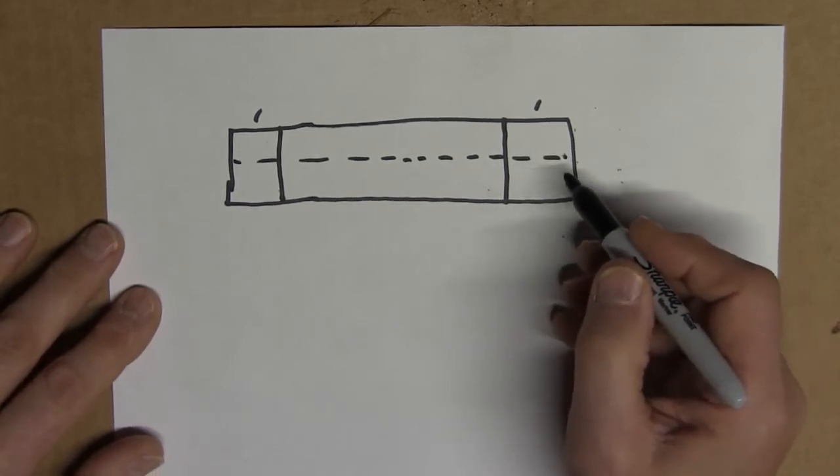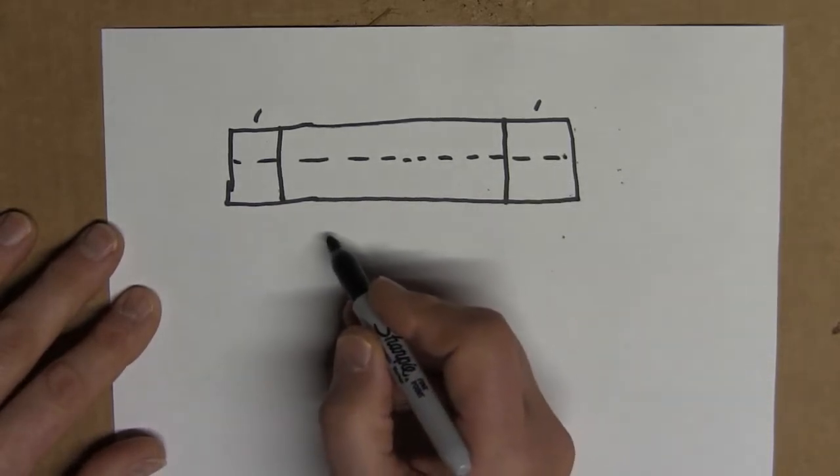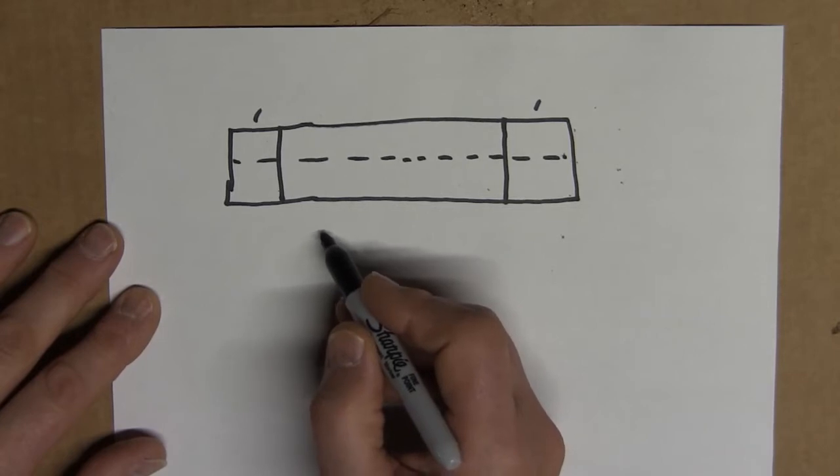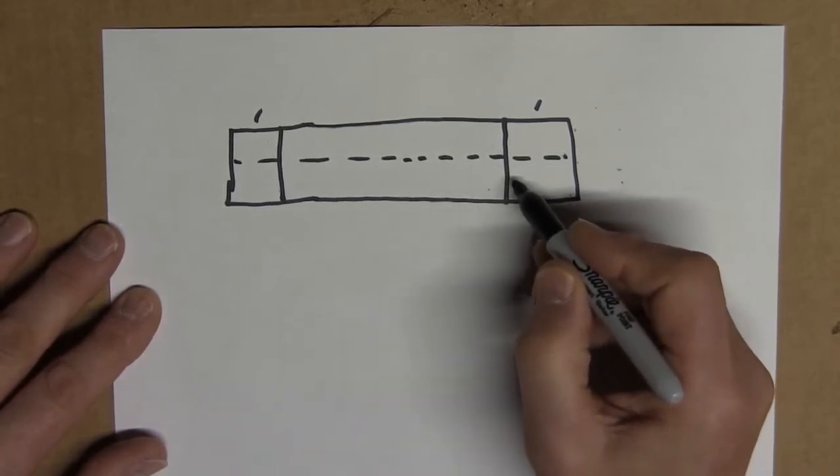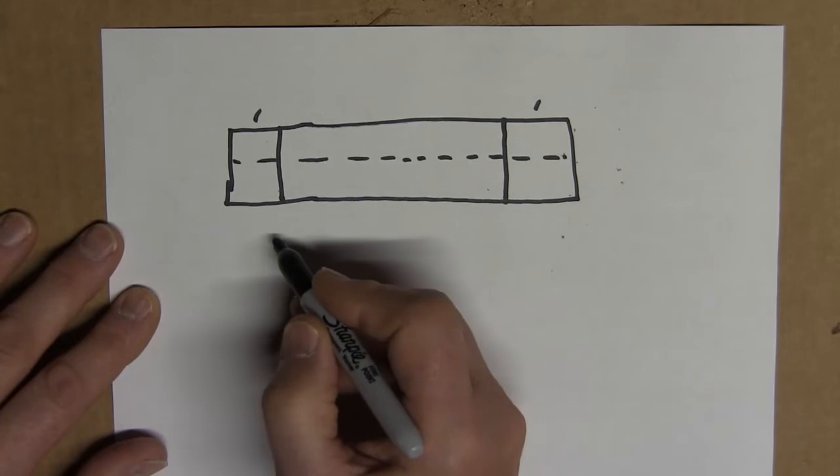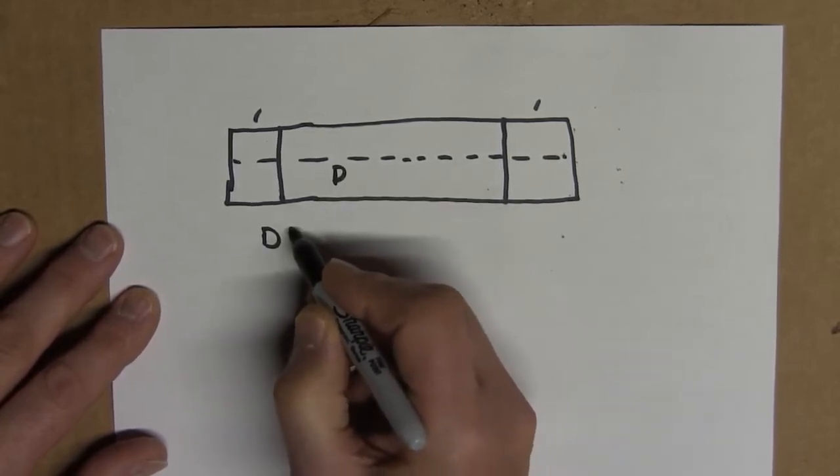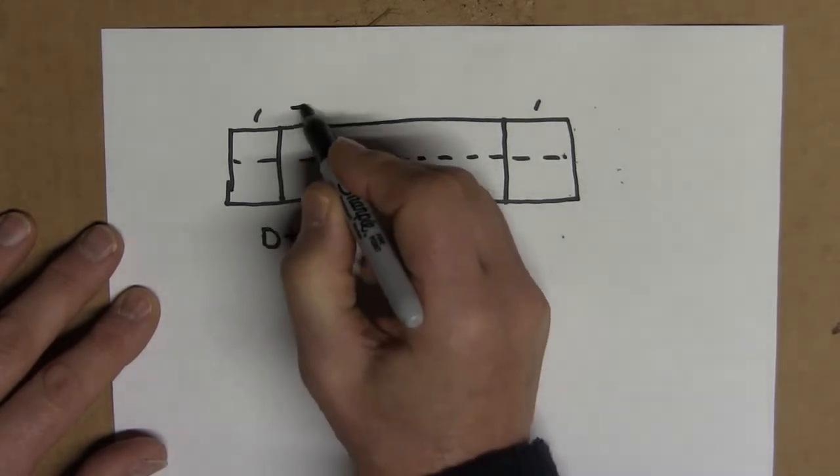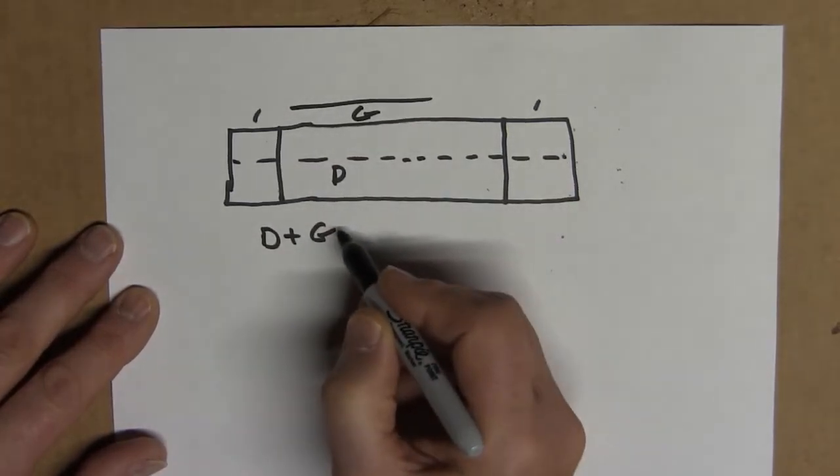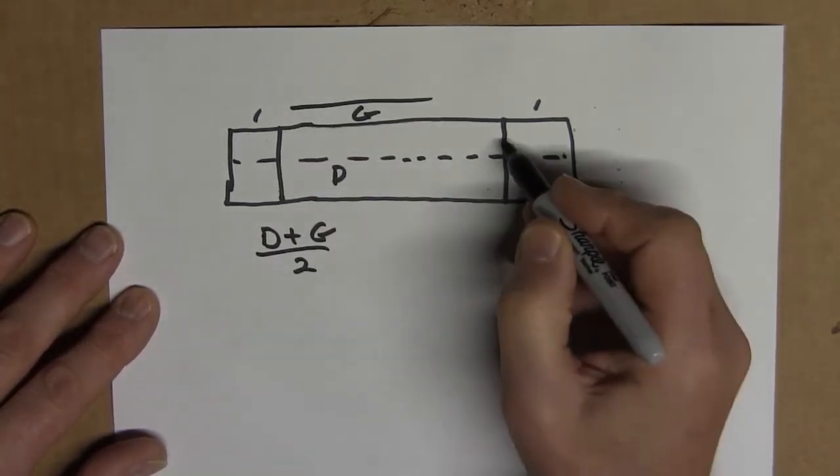Then you need to calculate, as we have talked about, the thickness of the base of your tongue. So as we did before, the diameter of the log plus any gap you want between the two logs divided by 2 is equal to that distance.